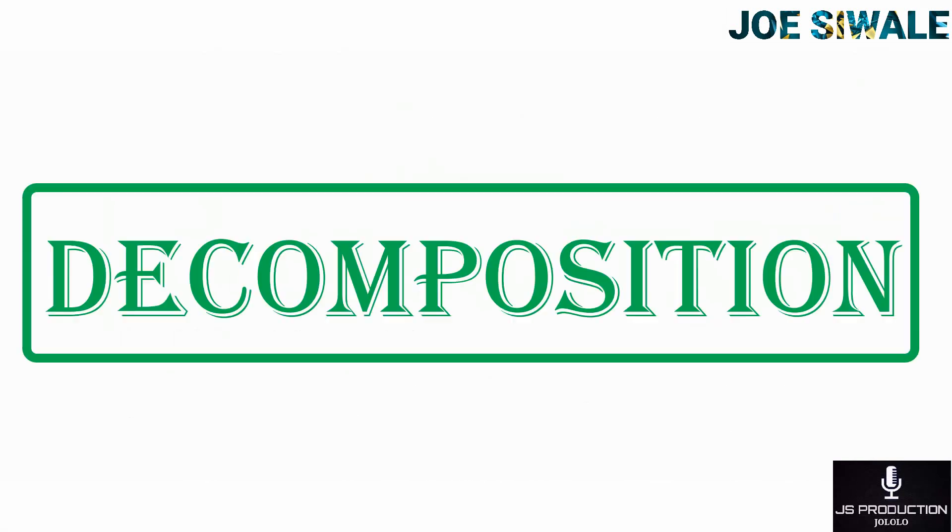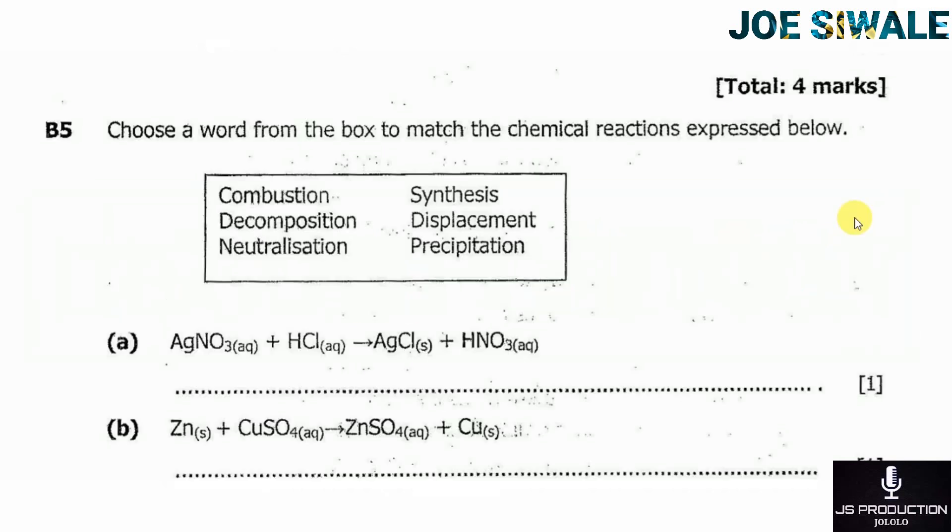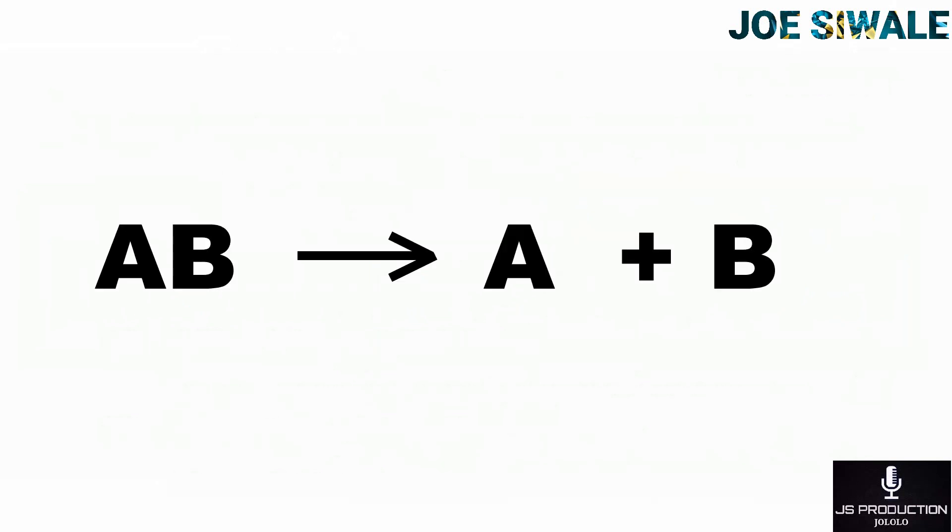Then what is decomposition? Decomposition is the process by which a substance is separated into two or more other substances that may differ from each other, and these substances differ from the original substance. For example, if you have the compound AB, and if it undergoes decomposition, it will produce A plus B.